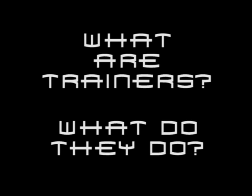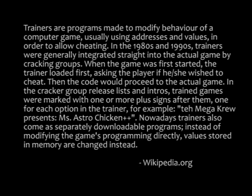So what are trainers and why are they useful? Well, this is what Wikipedia has to say: trainers are programs made to modify behavior of a computer game, usually using addresses and values in order to allow cheating. In the 1980s and 1990s, trainers were generally integrated straight into the actual game by cracking groups, and when the game was first started the trainer loaded first, asking the player which cheats they wanted. In cracker group release lists, trained games were marked with plus signs — one for each option in the trainer, for example 'The Mega Crew Presents Miss Aster Chicken ++'.